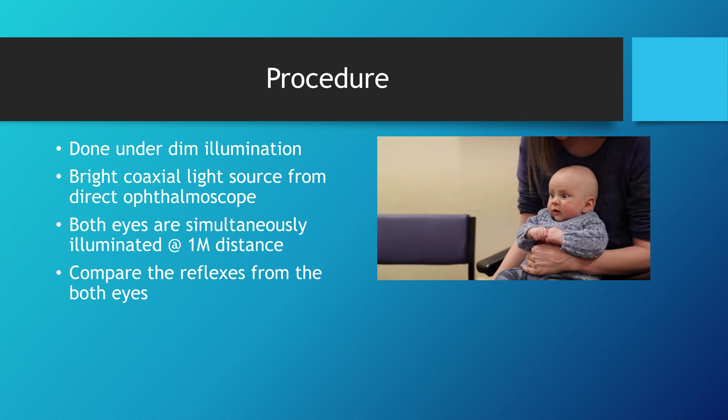The procedure is usually done under dim illumination where we use a bright coaxial light from the direct ophthalmoscope, and both eyes are simultaneously illuminated at one meter distance. We have to compare the reflex from both eyes.